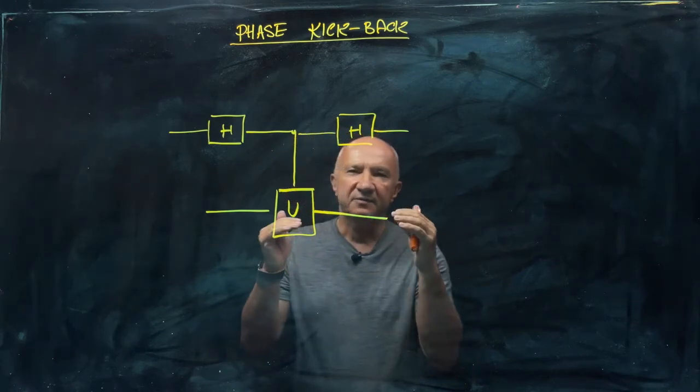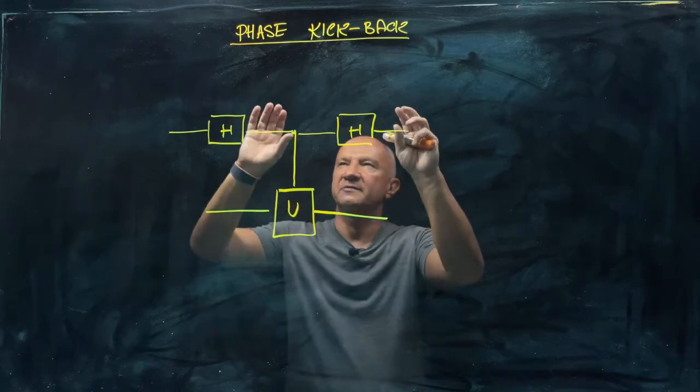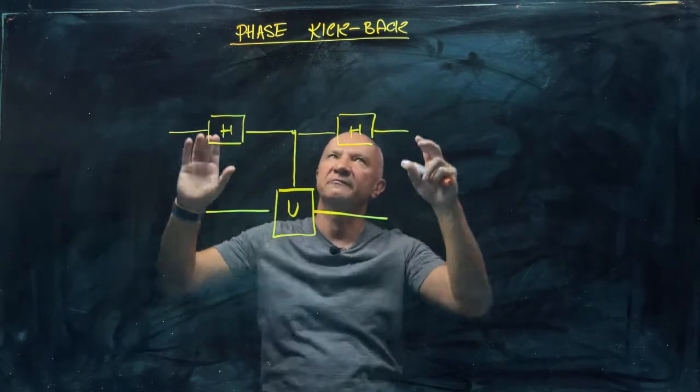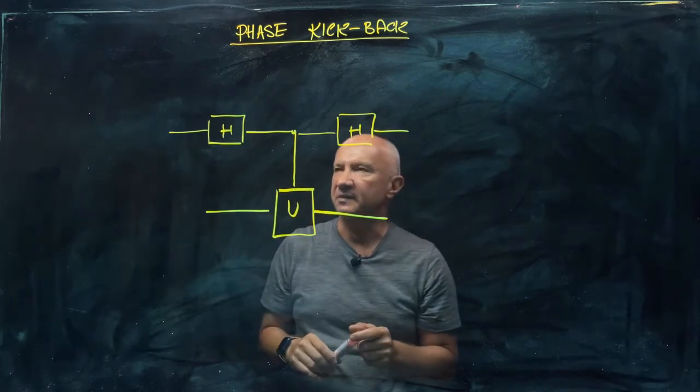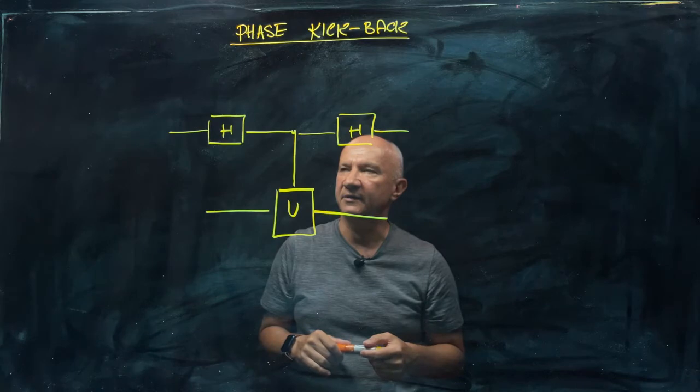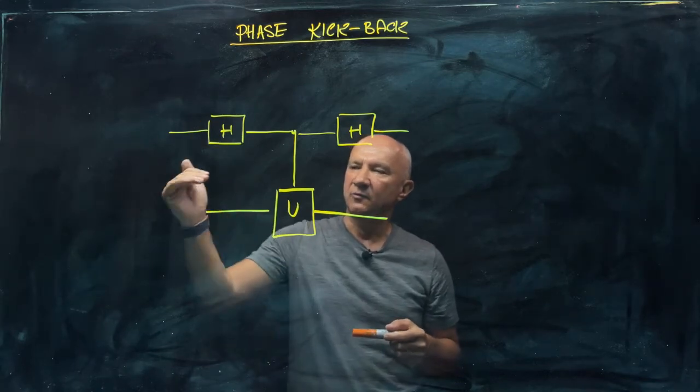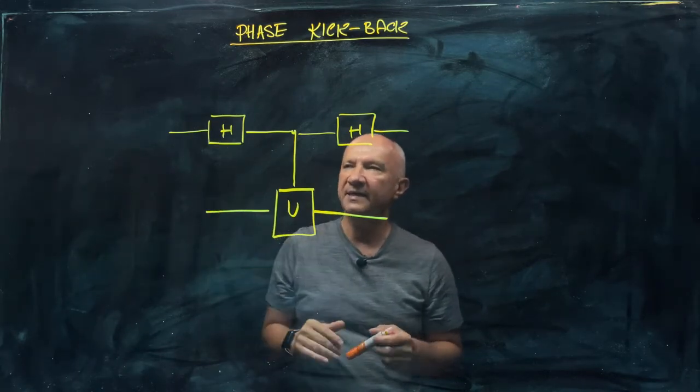In order to explain these simple operations of a phenomenon which we call the phase kickback, let me just analyze two qubits, the simplest possible scenario. So imagine that you have two qubits, the top one and the bottom one, and this circuit here.